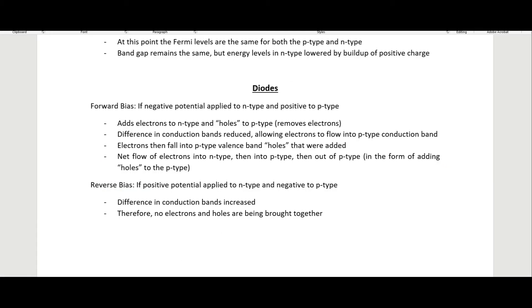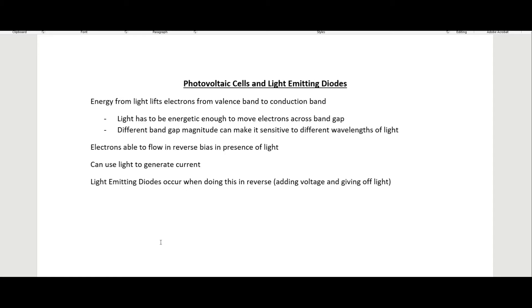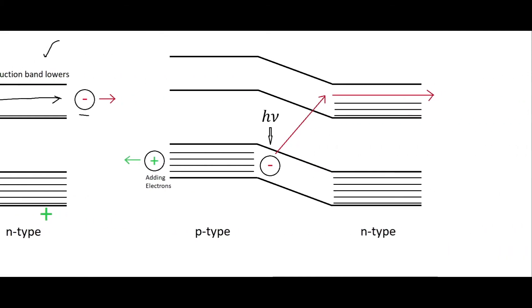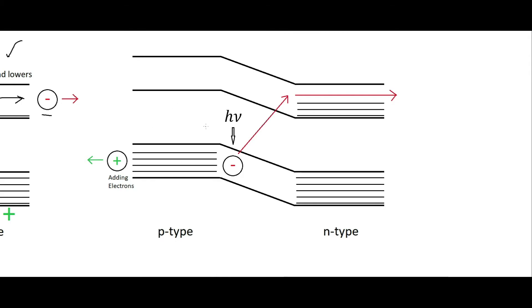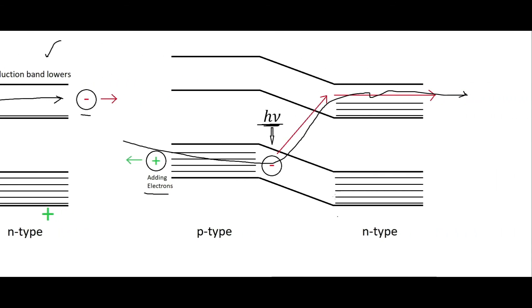That is what a diode is. Now we can think about photovoltaic cells and light-emitting diodes. If light comes in, it excites an electron which is able to move up to the conduction band. Holes move out as we effectively add electrons, creating a net electron flow. The light provides the energy for electrons to move from the valence band into the conduction band.